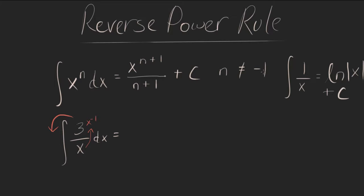In the case of n equaling negative 1, we use this rule here. This is a natural log problem. So we rewrite this as 3 times the integral of 1 over x dx, which equals 3, 1 over x equals ln of absolute value of x plus c. So 3 ln absolute value of x plus c. And that's our answer.